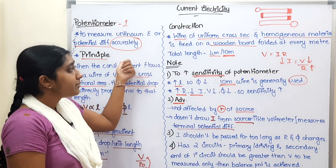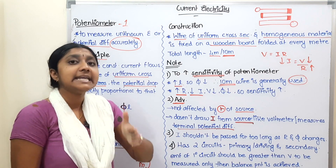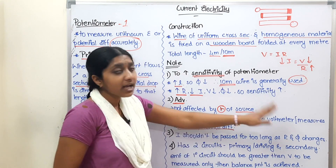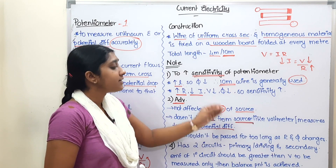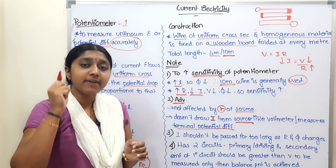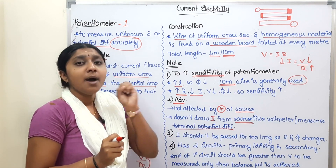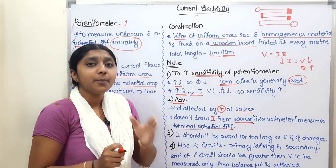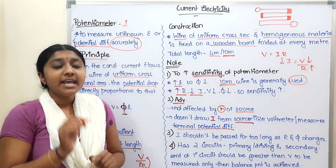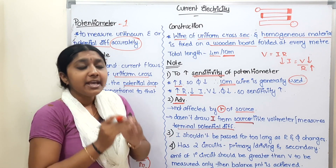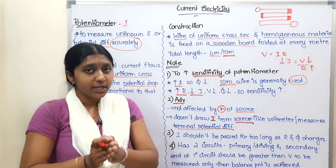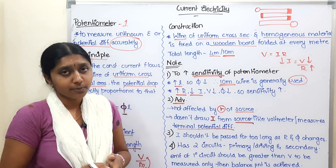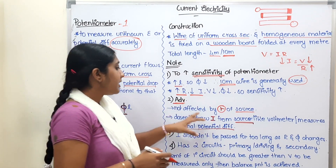The second advantage is that the potentiometer does not draw current from the source at the balance point. Because no current is drawn, we can measure the true EMF of the source accurately. This is why the potentiometer is preferred over a voltmeter.